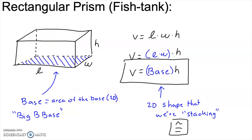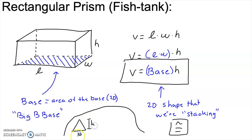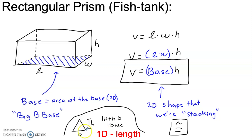Let me quickly explain why I say Big B Base. If I have a triangle, the area of a triangle is one-half base times height, and we always use lowercase b for that base — I call that little b base. Lowercase b is a one-dimensional measurement; it's just the length of one dimension. Big B Base is a two-dimensional measurement — it's the area of the two-dimensional shape that we're going to stack into the third dimension.